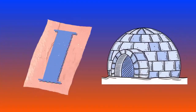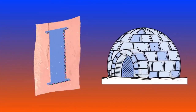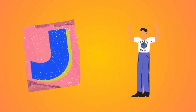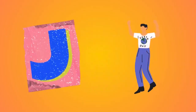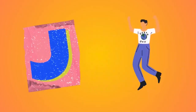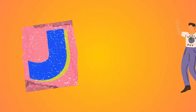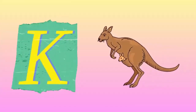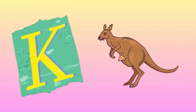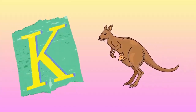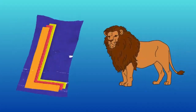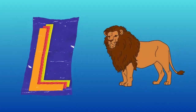I is for igloo, i-i-igloo. J is for jump, j-j-jump. K is for kangaroo, k-k-kangaroo. L is for lion, l-l-lion.